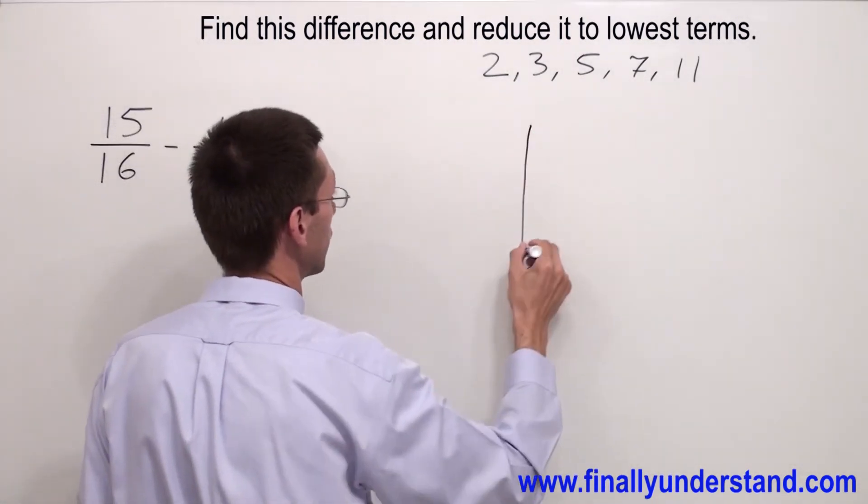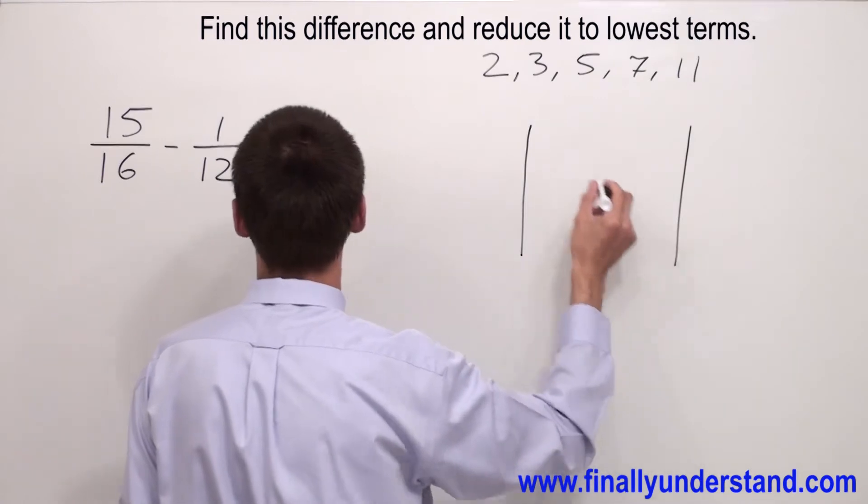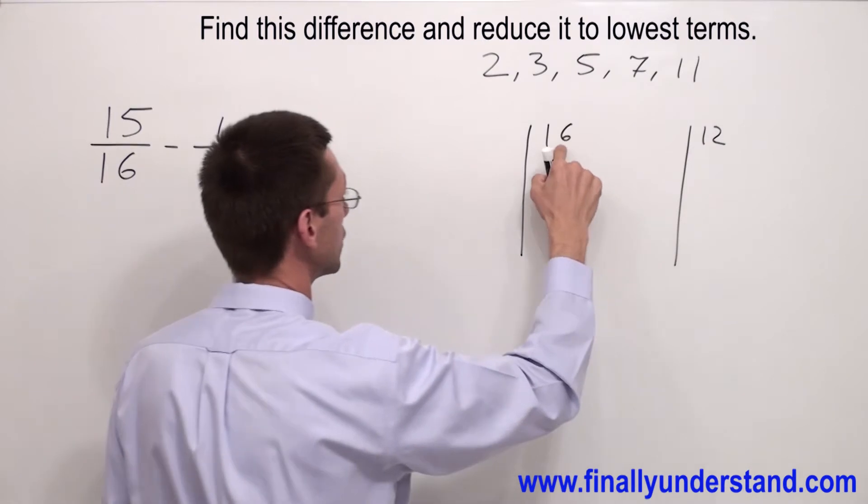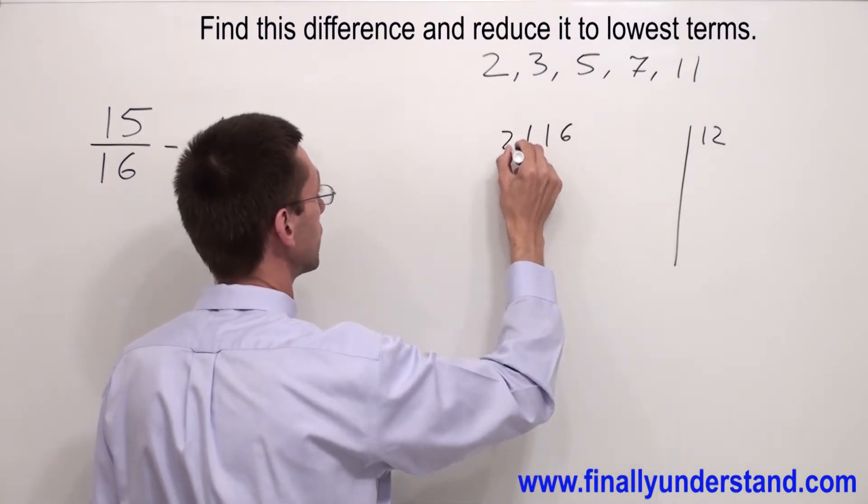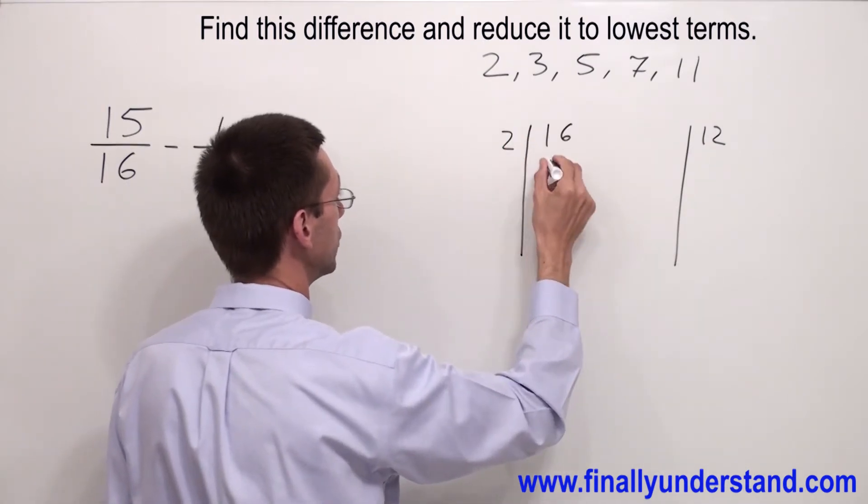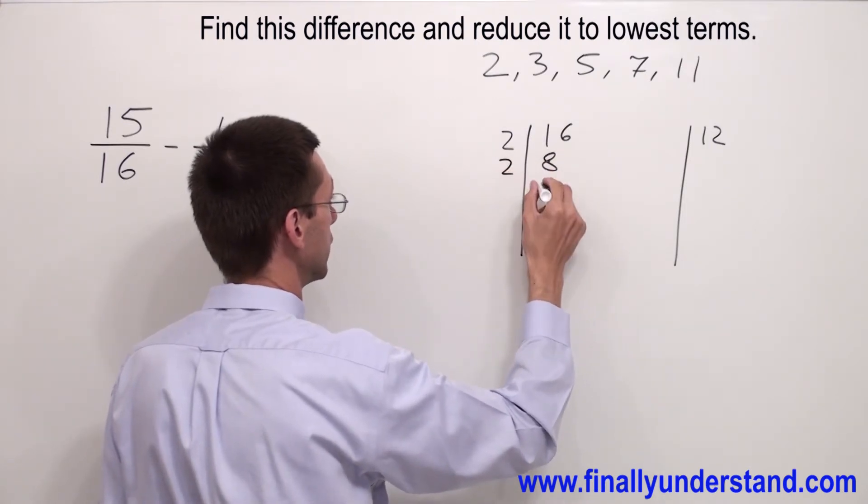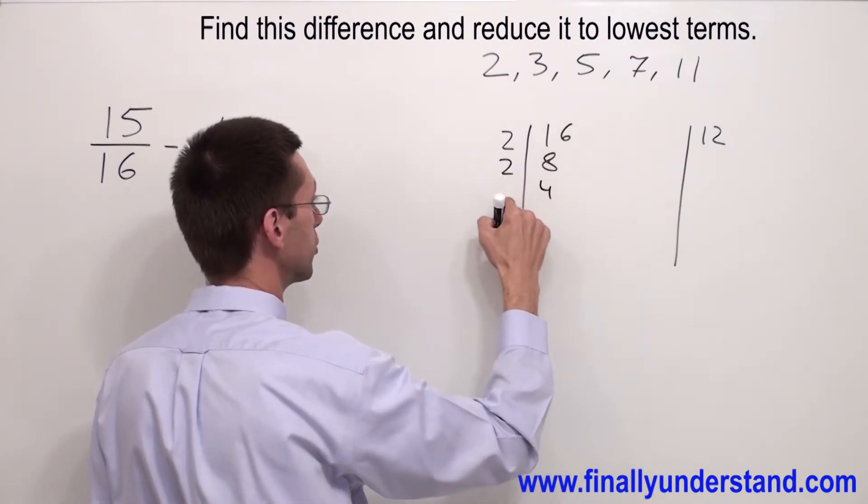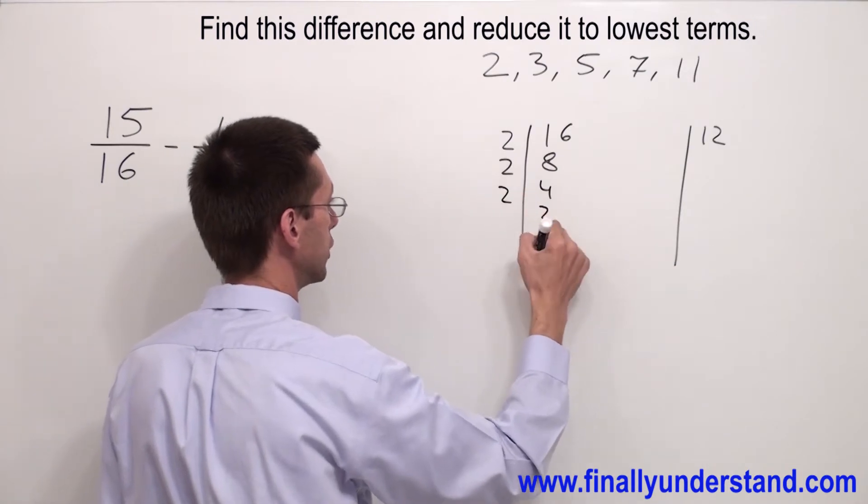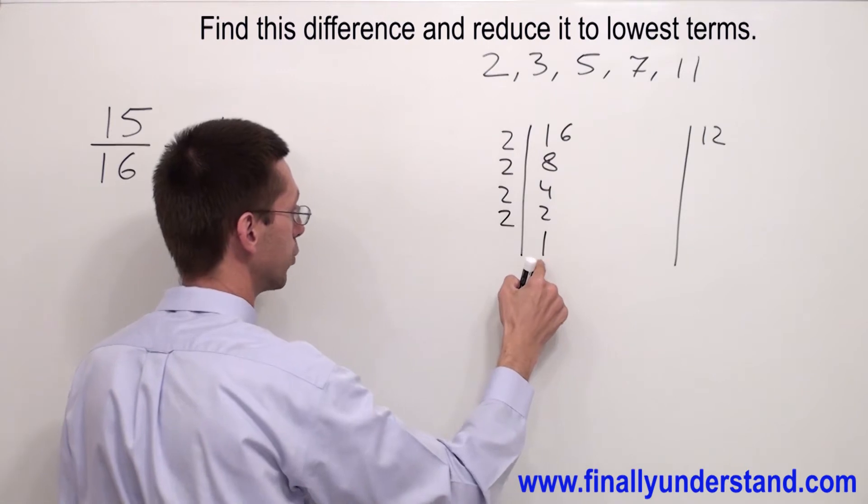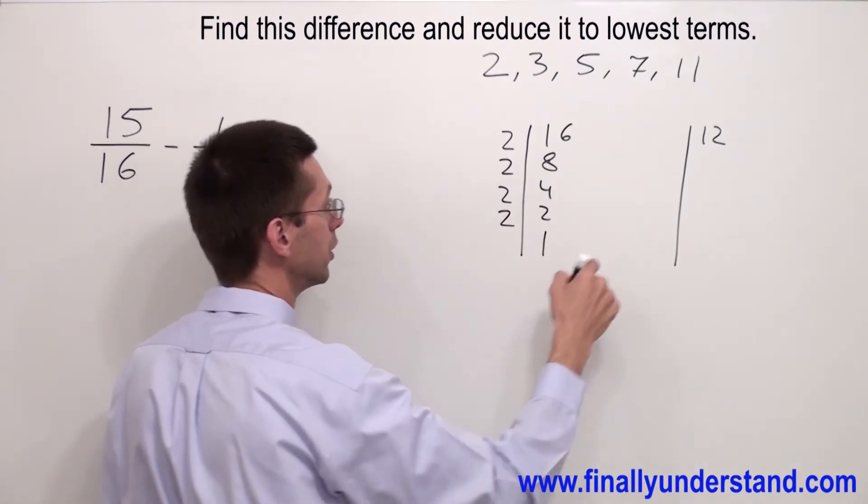So I have 16 and I have 12. 16 is divisible by 2. 16 divided by 2 is 8. 8 is divisible by 2 is 4. 4 is divisible by 2 is 2, and 2 is divisible by 2 is 1. I got 1, so that means I finished my division.